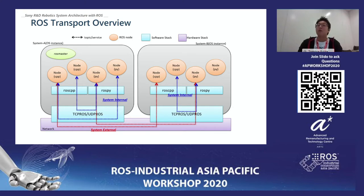Before we move on to the ROS-specific features that we have done, let me explain how ROS1 transport works. Once the application starts — publication or subscription — it will use TCP as default. You can switch it to UDP if you want to, but as default you're going to use TCP.